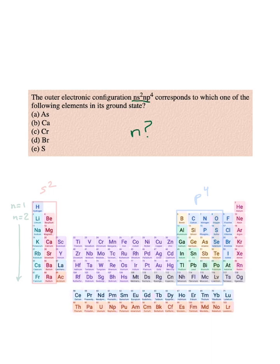We don't know what the n value is, but we know that each row of the periodic table is associated with a different value of n, denoting its energy level.